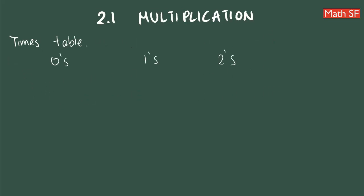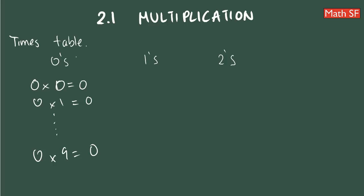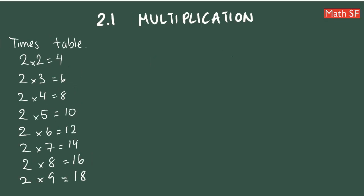Looking at the times table — do we need to know the times table of 0? For example, 0 times 0 or 0 times 1? No, because any number times 0 will always give you 0, so you don't need to memorize that list.